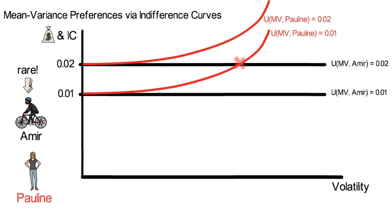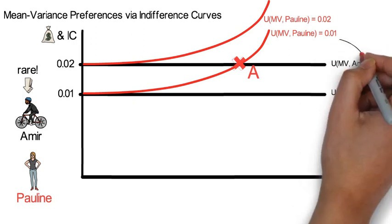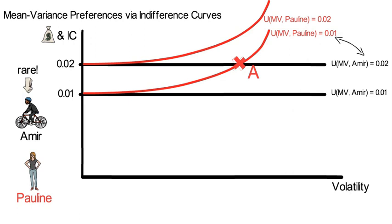Also notice how an investment with an expected return volatility of A creates an expected utility of 0.02 to Amir but only an expected utility of 0.01 to Pauline. Pauline's expected utility is not increasing because she dislikes that investment A results in a larger variance.